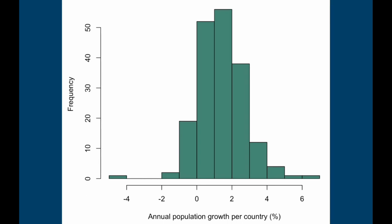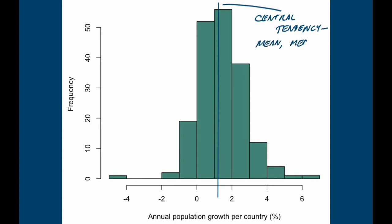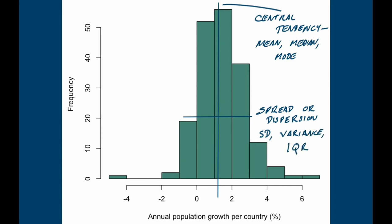So how can we describe that frequency distribution? First of all, it has a central tendency — there is a center of the frequency distribution — and we can give a location for that central tendency as a mean, a median, or a mode: one of the three M's we use to describe the middle of a symmetrical data set. Then there's some kind of spread or dispersion around that central tendency, which we can describe using the standard deviation, the variance, or alternatively the interquartile range, which is more suitable for asymmetrical data sets.